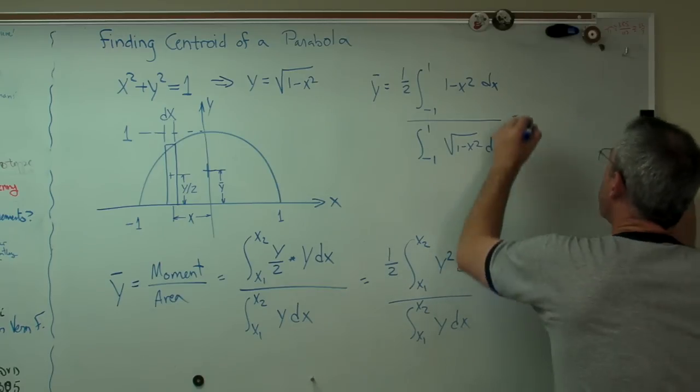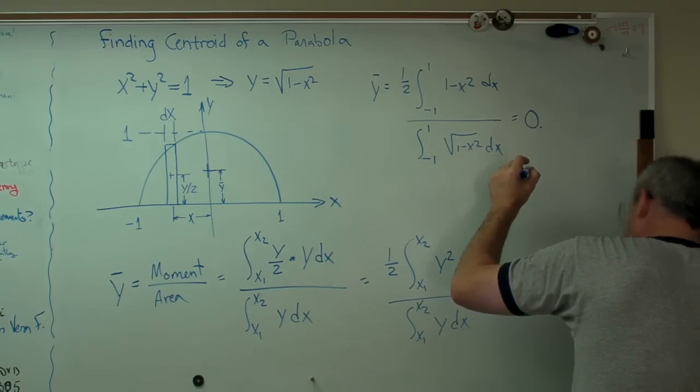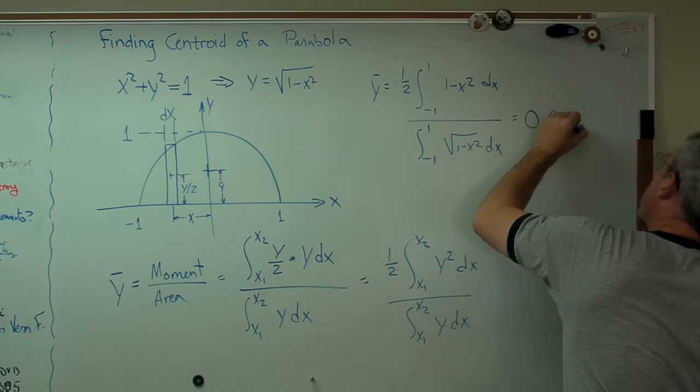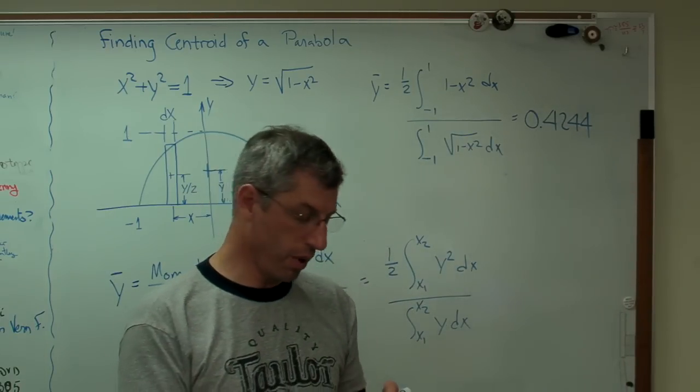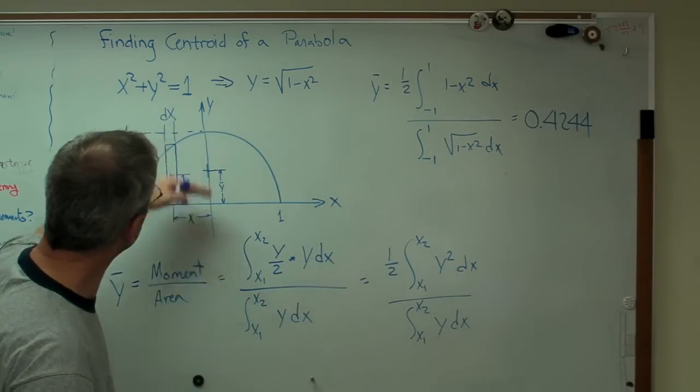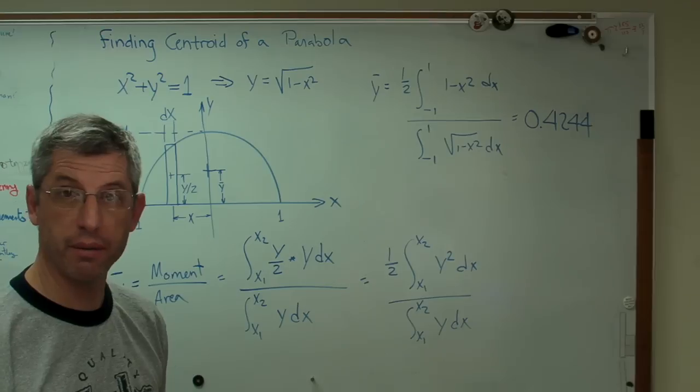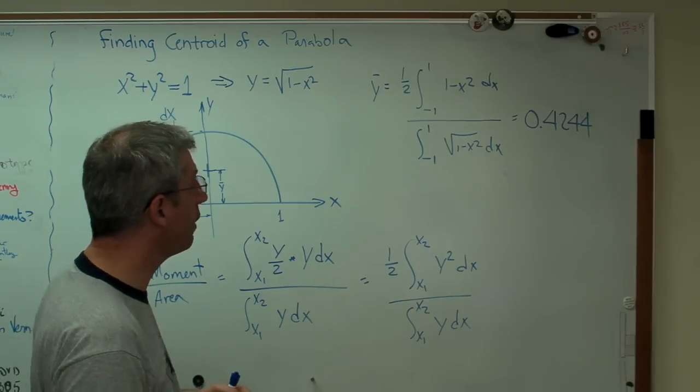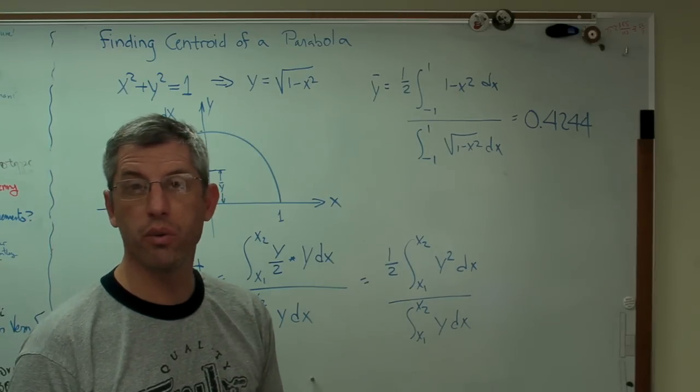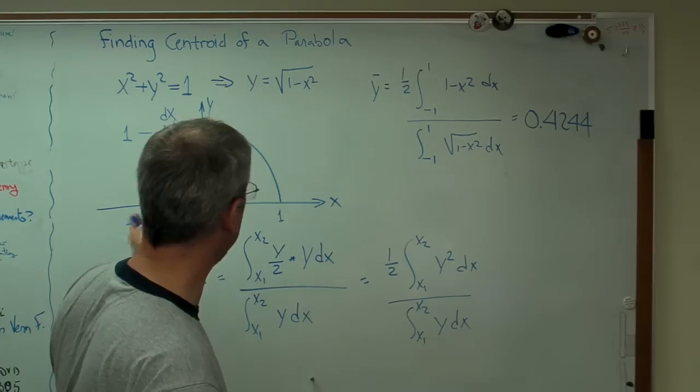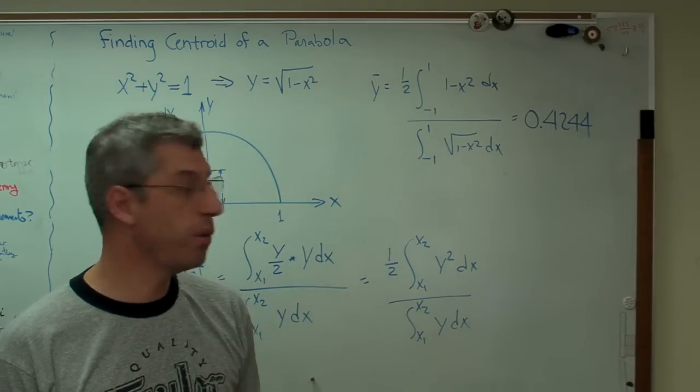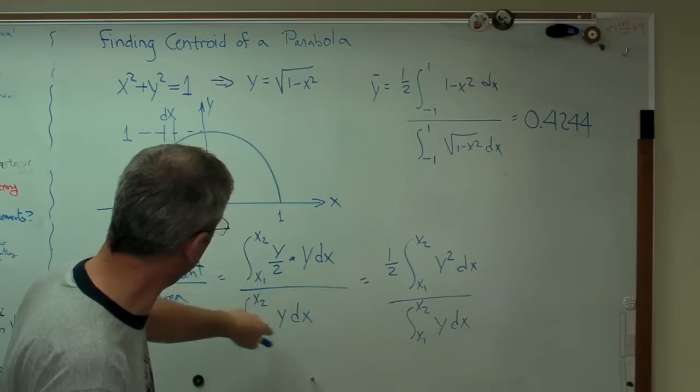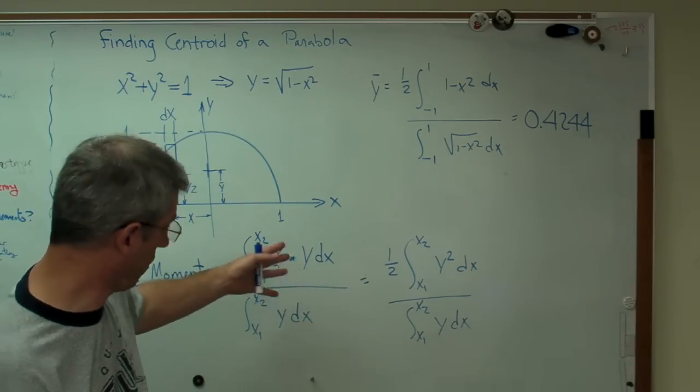And if you carry that out, you get 0.424 basically. If you look up in a table where the vertical centroid of a semicircle is, you find out it's 2 times 1 over 2 times the diameter. Well, my diameter is 2 and that's twice 2, 1, 2. So we've got a method that works here. This method right here will work no matter what y is.